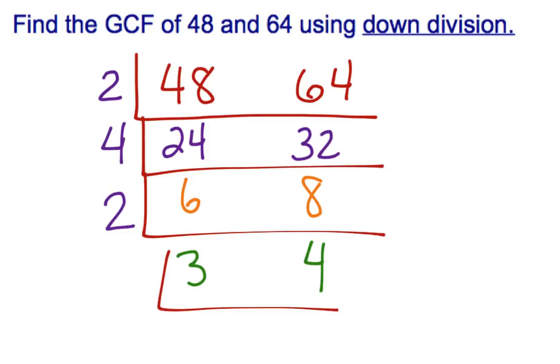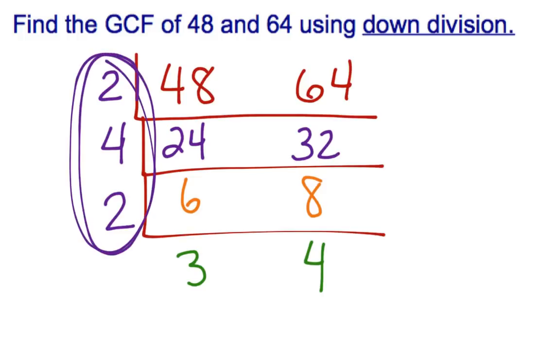That tells us that this is our last step. The only thing that could go into both of those numbers is one and then we would just have a repeat of our last step. So when we get to that point then we know that our down division is finished.